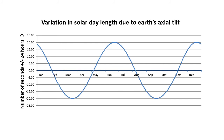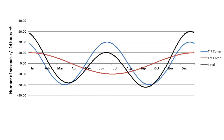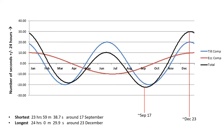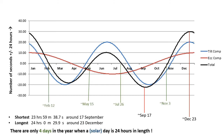The solar day is longest at the June and December solstices at around 24 hours 20 seconds, and shortest at around 23 hours 59 minutes 40 seconds at the two equinoxes. The combination of both effects is shown as the black line in the graph. The longest solar day is around the 23rd of December and the shortest around the 17th of September, though these dates vary a little year to year. Interestingly, although a day is often thought of as 24 hours, there are actually only four days a year when the natural day measured by the Sun's motion is 24 hours — and even then not exactly to the nearest millisecond.